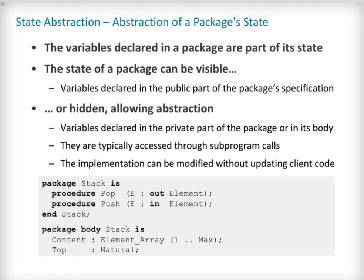Subprograms are not the only objects that can benefit from abstraction. The state of a package — that is, the set of persistent variables defined in it — can also be hidden from external users. This form of abstraction, called state abstraction, is usually achieved by defining variables in the body or private part of a package, so that they can only be accessed through subprogram calls. For example here, our stack package provides an abstraction for a unique stack object, which can be modified using the pop and push subprograms. The fact that it is implemented using an array is irrelevant to the user and could be changed without impacting user code.